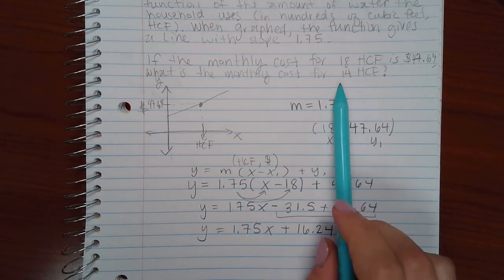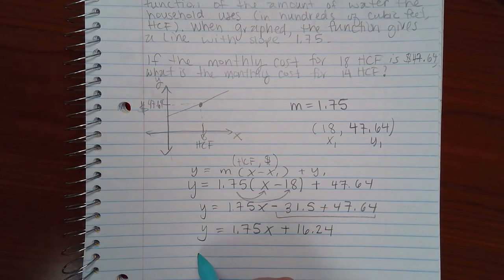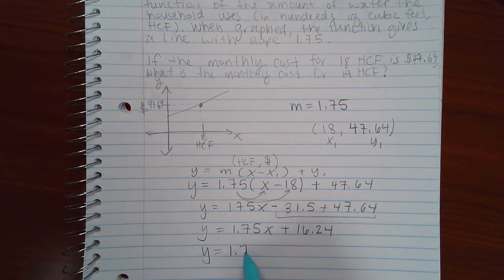So if they're asking me for 14 HCFs, then that means I'm going to be plugging in 14 for my X value.